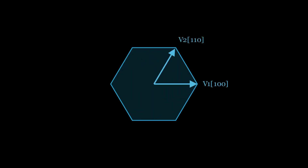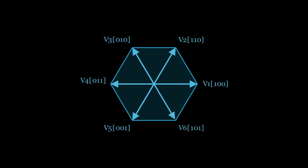On the screen, we see a hexagonal diagram representing the six basic vectors of a three-phase inverter. Each vector, from V1 to V6, shows a different combination of switch turn-on states in the inverter. At the center of the diagram is the neutral point, or zero vector, V0 and V7, which is generated when all switches are either on or off simultaneously.